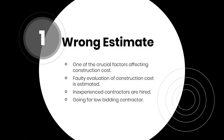Wrong Estimate. It is considered the most crucial factor in increasing the cost required to complete a construction project. Many inexperienced contractors don't have proper knowledge of the industry, and that is why they estimate the capital needed for a project less than the actual one. On the other hand, project owners assign their project to bidders who give less estimation considering it convenient, but they make a big mistake here. A faulty evaluation potentially causes cost overrun.